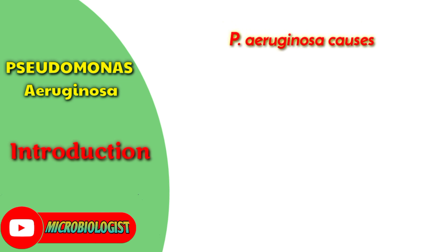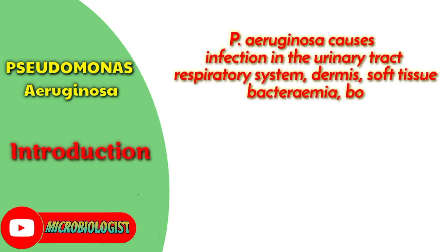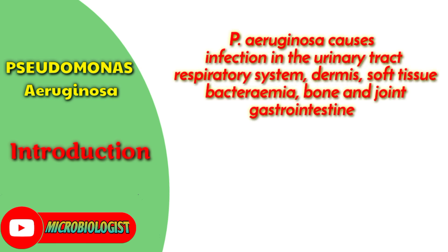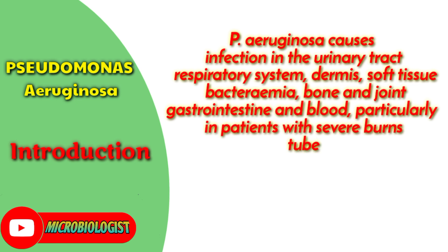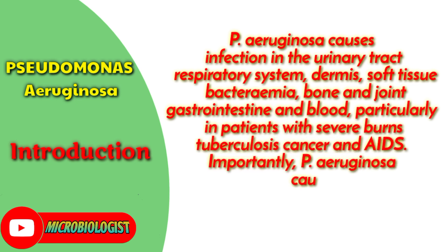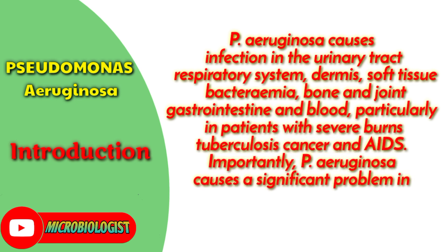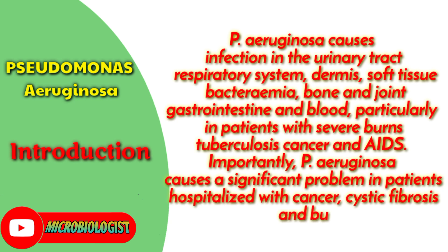P. aeruginosa causes infection in the urinary tract, respiratory system, dermis, soft tissue, bacteremia, bone and joint, gastrointestine and blood, particularly in patients with severe burns, tuberculosis, and cancer.